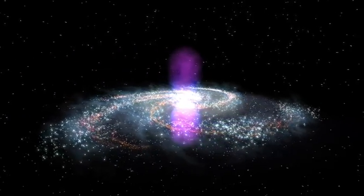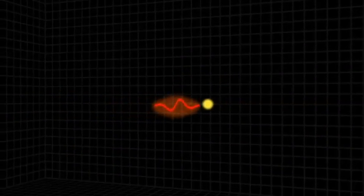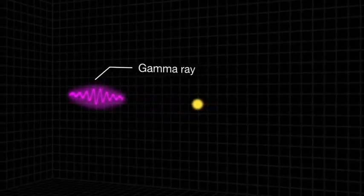Within the bubbles, extremely energetic electrons are interacting with lower-energy light to create gamma rays, but right now, no one knows the source of these electrons.